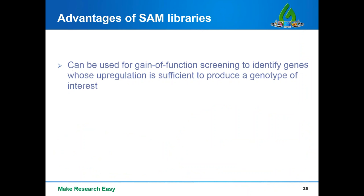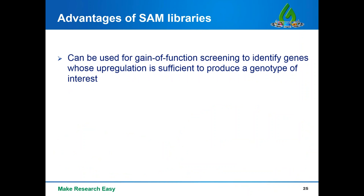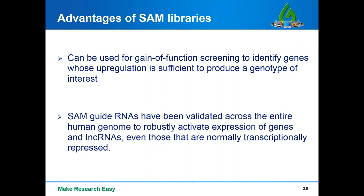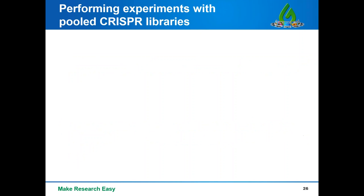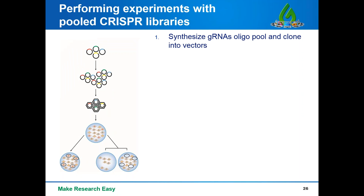Advantages of the SAM library: (1) Can be used for gain-of-function screening to identify genes whose upregulation is sufficient to produce a phenotype of interest. (2) SAM guide RNAs have been validated across the entire human genome to best activate expression of genes and lncRNAs, even those that are normally transcriptionally repressed.